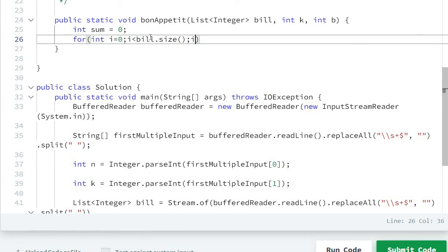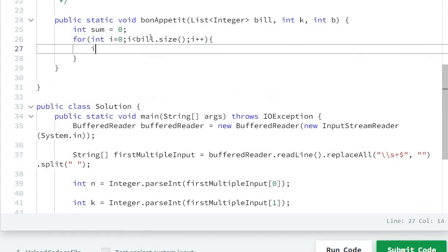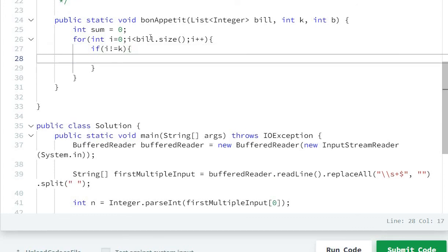I'll check if i is not equal to k, because the k index element price we should not include. So I will do sum equal to sum plus bill.get at element i.